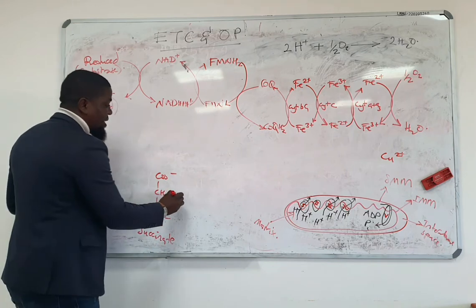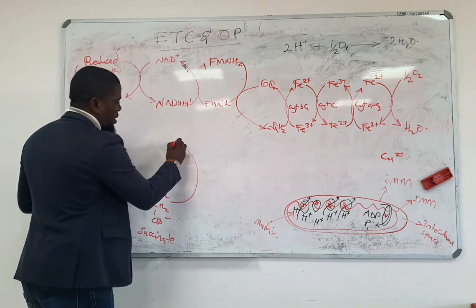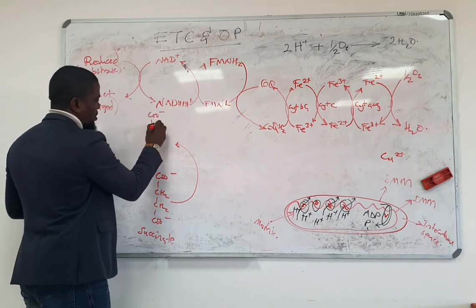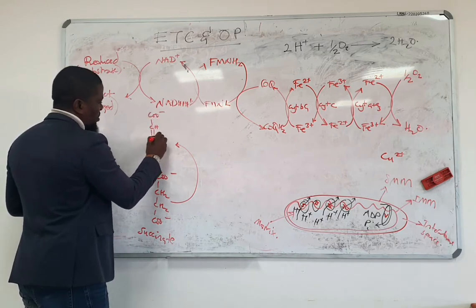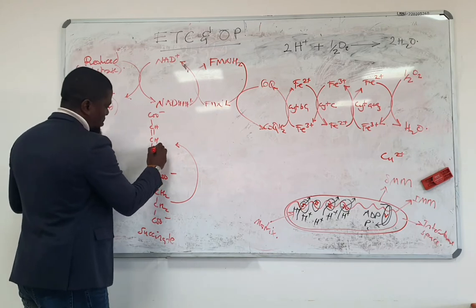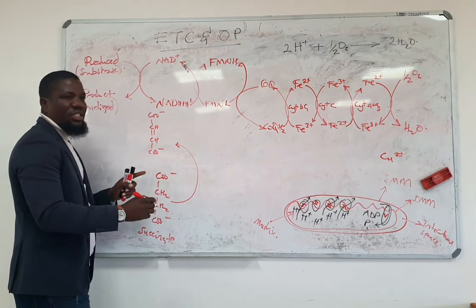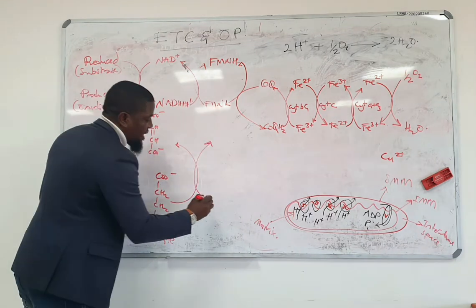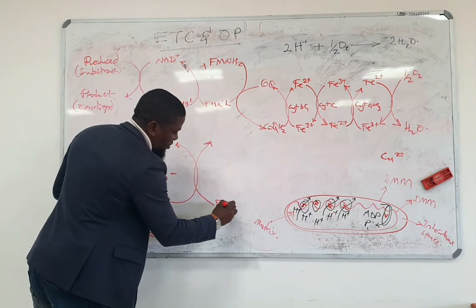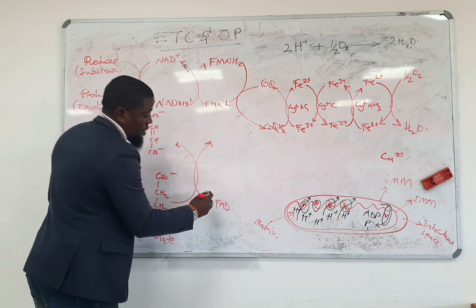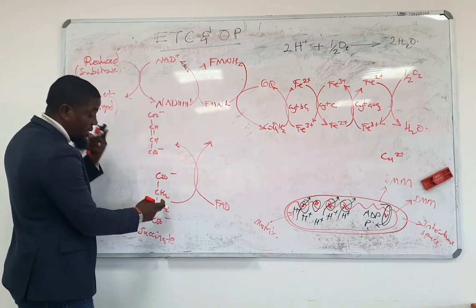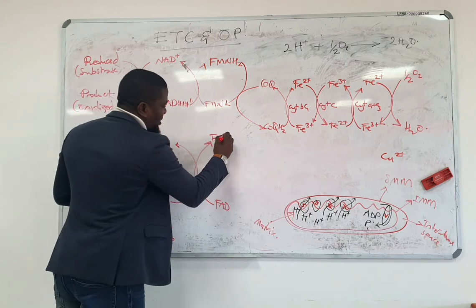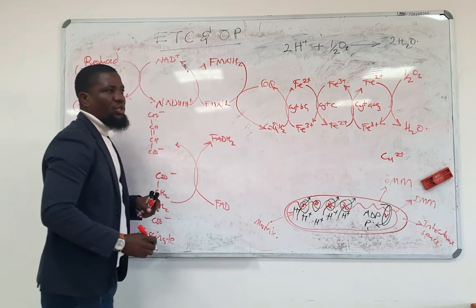oxidized. The succinate is going to be oxidized into fumarate and as it is oxidized into fumarate, the coenzyme of this enzyme, FAD, is going to abstract these hydrogens. And in the end, the FAD becomes reduced.